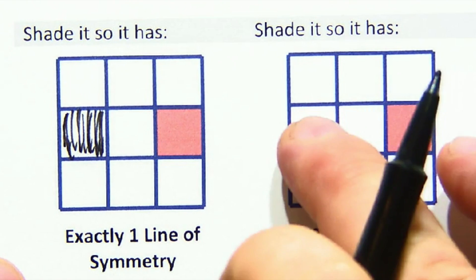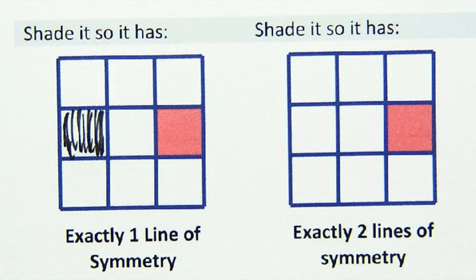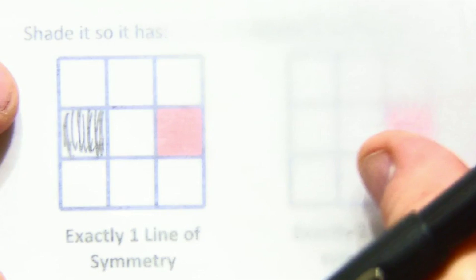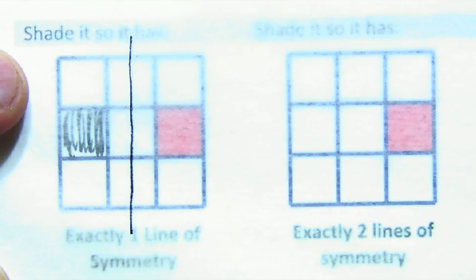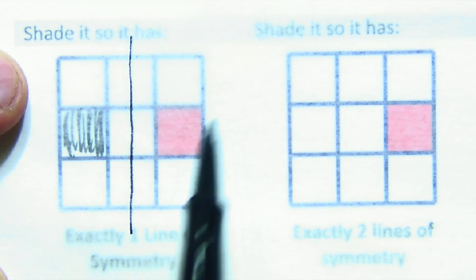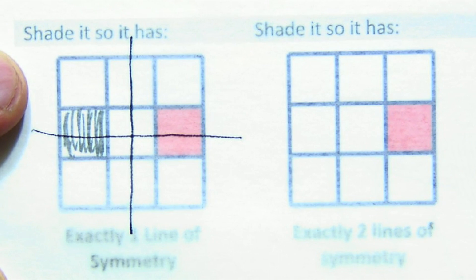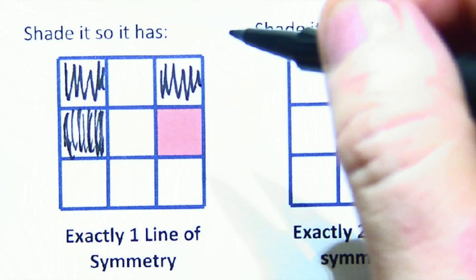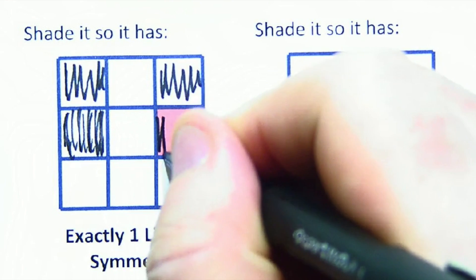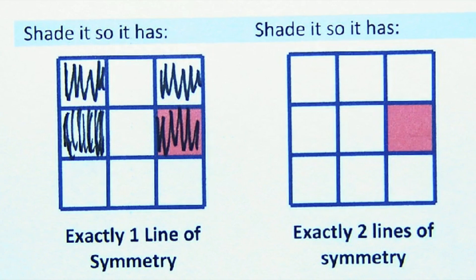This actually would have two lines of symmetry, not one, because there would be a line of symmetry that would go this way, mapping it onto itself. But there would also be this one. So that's not a good thing. So let's change it. So how about if we shade in this and this?